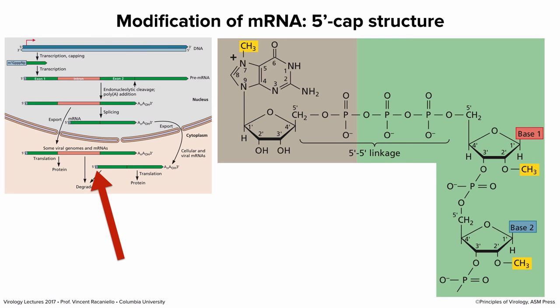Now let's go back to transcription and look at how the mRNA is made and modified. The first modification is the cap at the five prime end. In our scheme of transcription, the cap is added very early on and stays with the mRNA through processing to the mature mRNA, where you see a five prime cap shown as a little blue box.